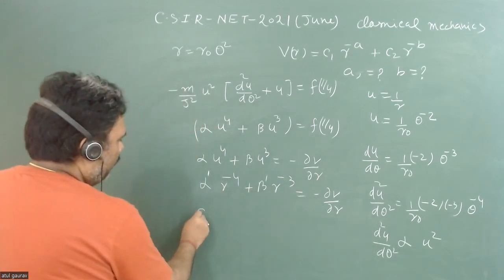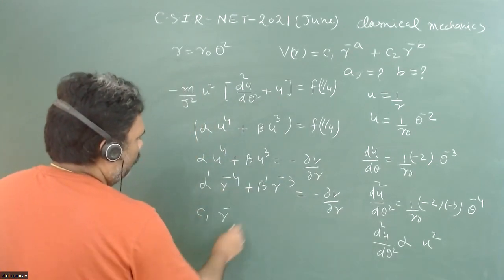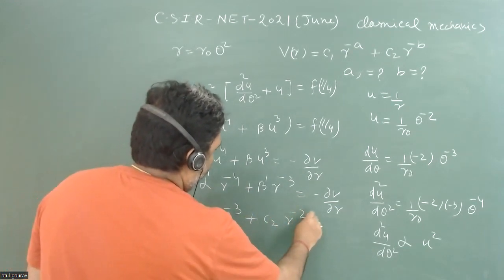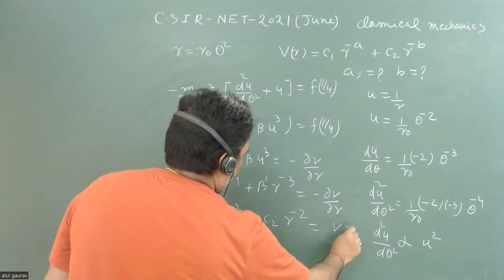When we will integrate it, then we have c1 r to the power minus 3 plus c2 r to the power minus 2. This is my potential v r.